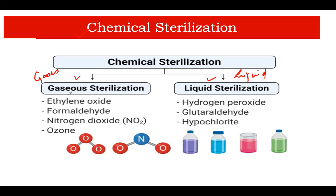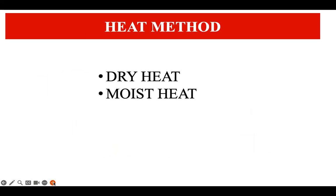In terms of gaseous sterilization, the different gases used are ethylene oxide, formaldehyde, nitrogen dioxide, and ozone. The commonly used liquid sterilizing agents are hydrogen peroxide, glutaraldehyde, and hypochlorite. You might have heard some of them in your practical classes.